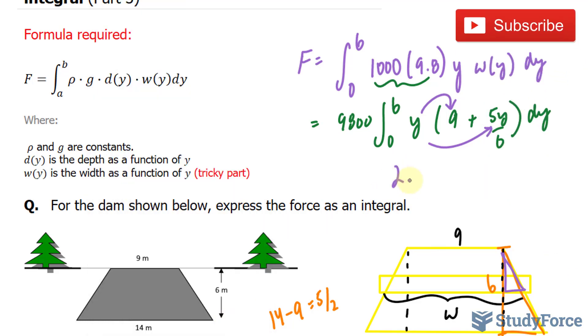So, 2.17 times 10 to the power of 6 newtons. That is the amount of force exerted on this trapezoid shaped dam. So there you have it.